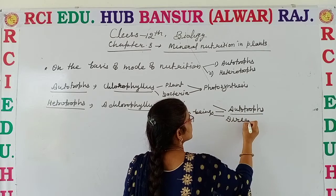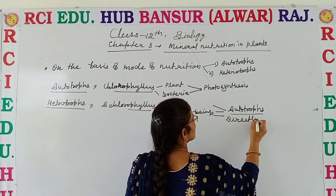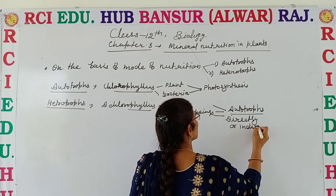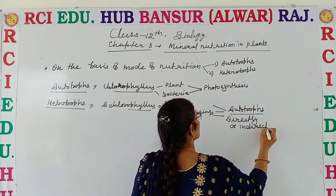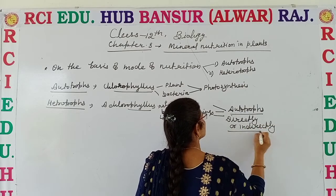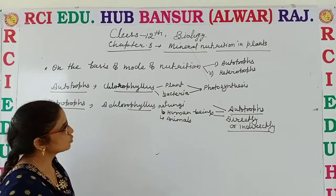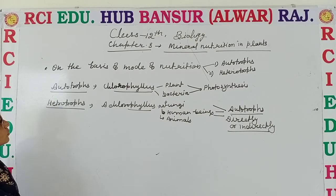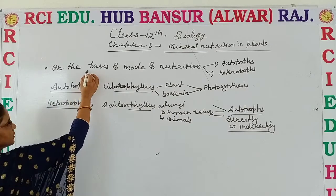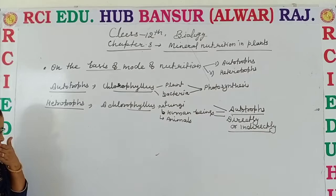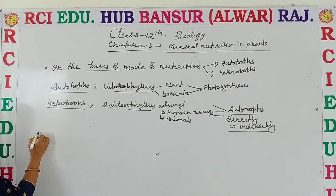So these are the two modes of nutrition. On the basis of mode of nutrition, two types of organisms are there. Now we move on to the dependency of plants on nutrients.